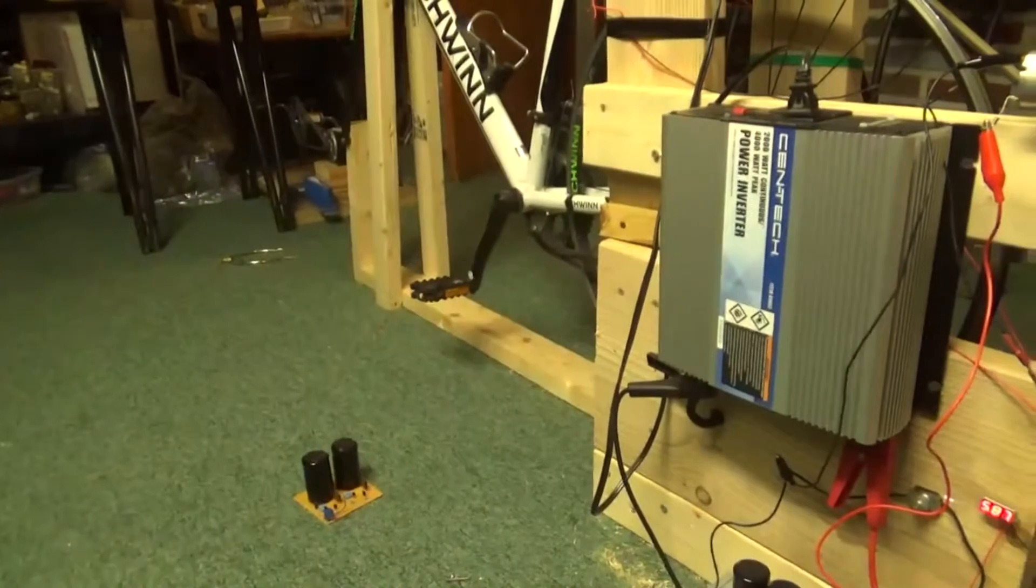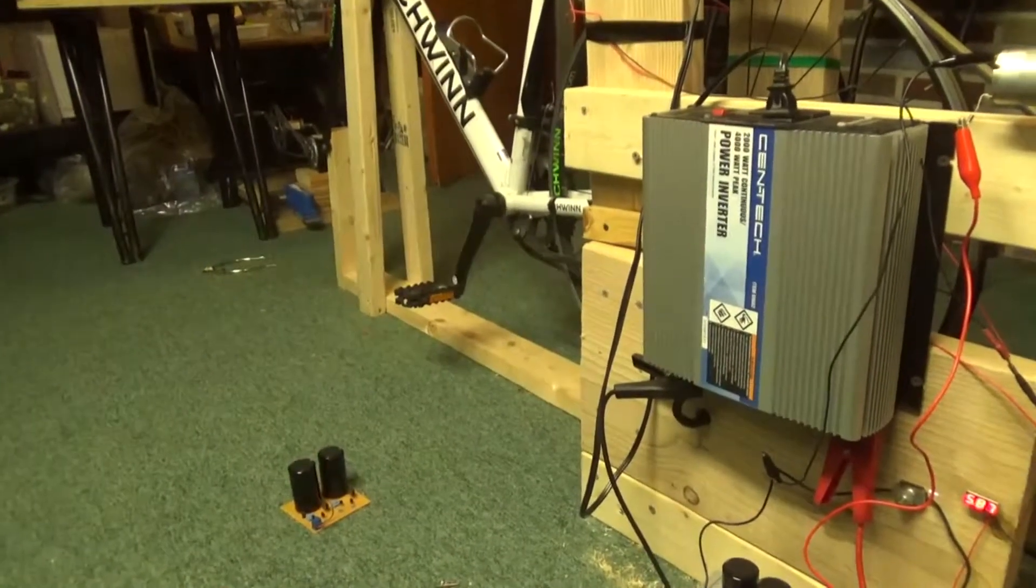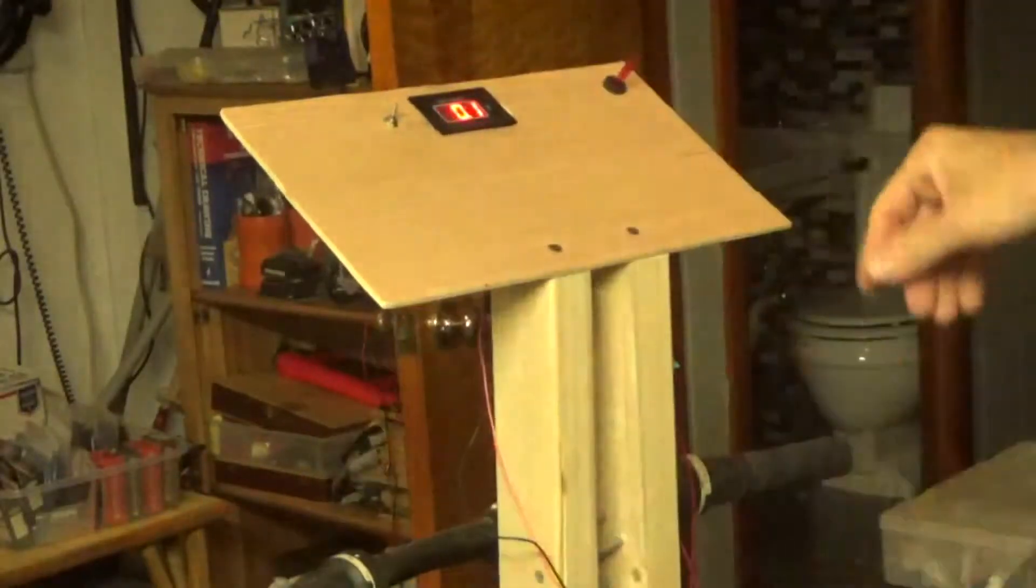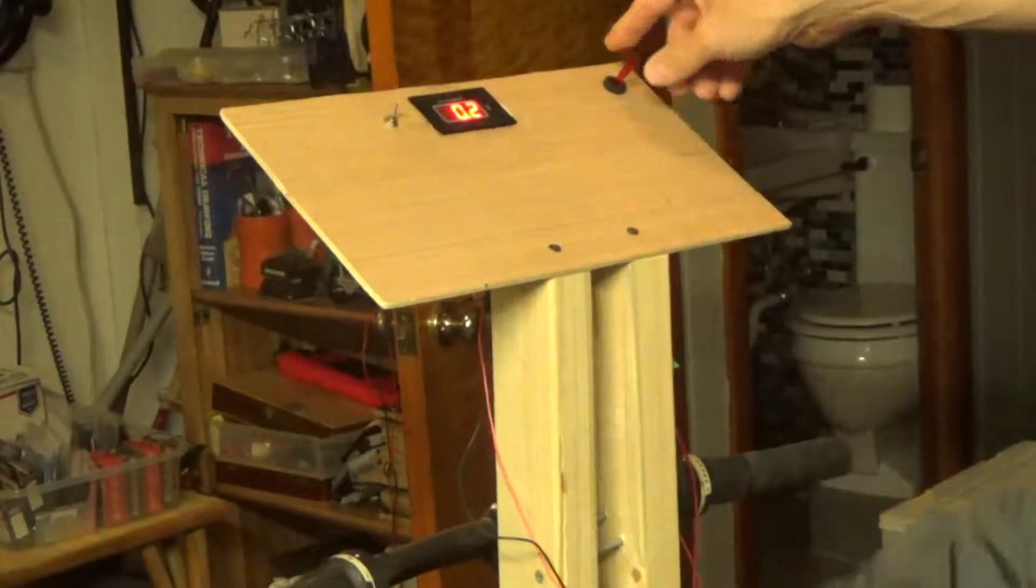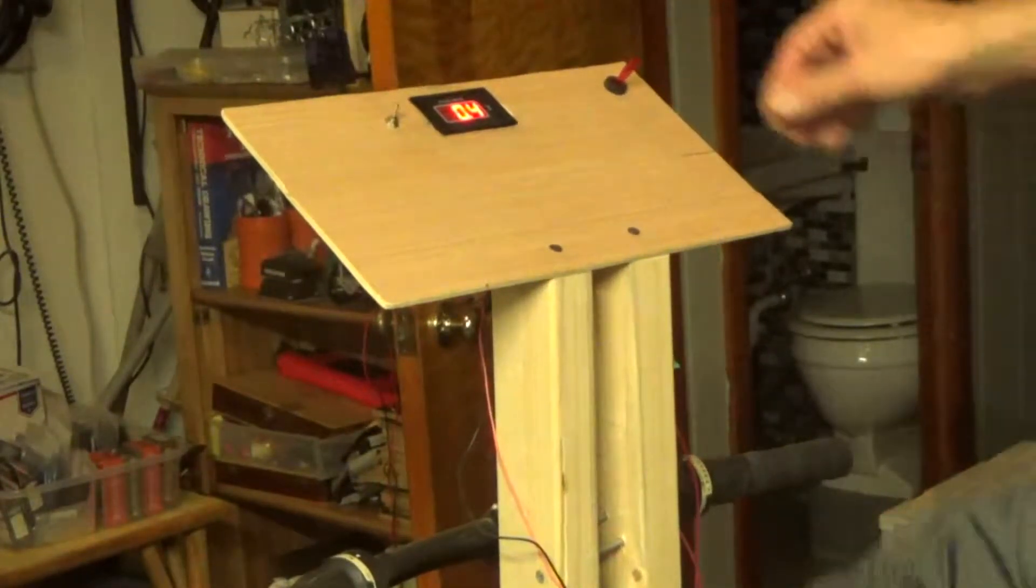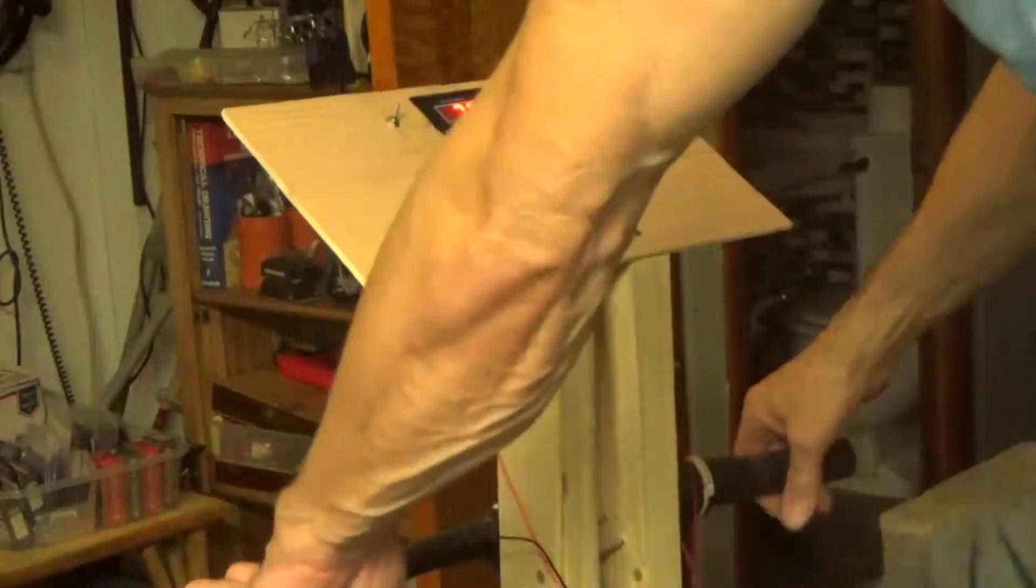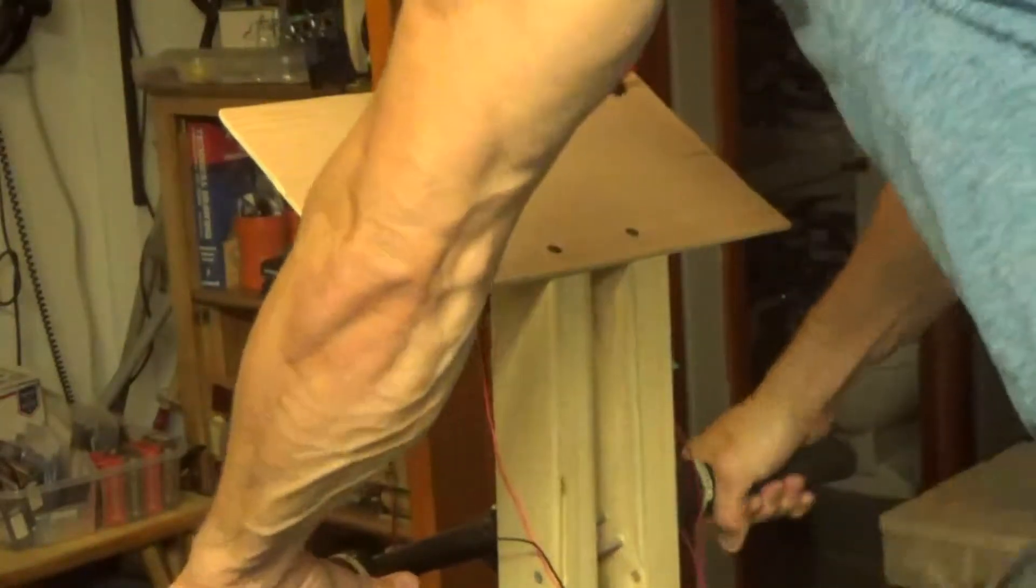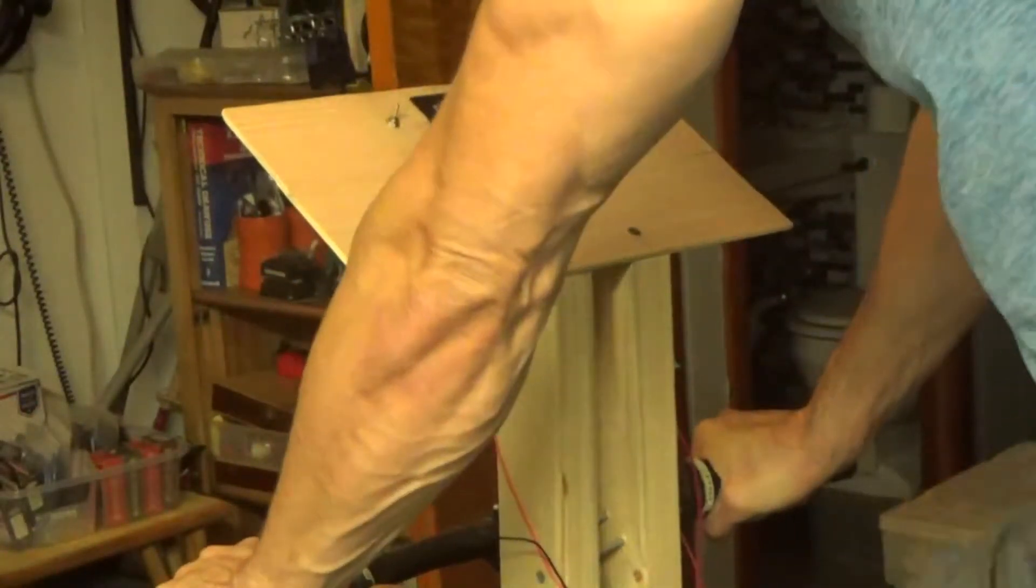On the bike, we'll turn this thing on which is turning the current on to the alternator. It's going to get hard to pedal. It did, now it's a little harder to pedal but not as hard as that 500 farad super capacitor from Maxwell.